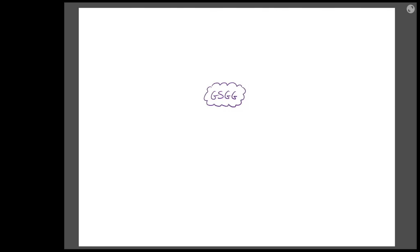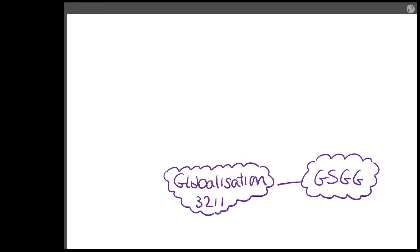It follows the same structure, so I have used the specification to make the mind maps and this can be used to complement your revision so you can add further detail with different case studies and examples from your lessons. I'm going to start with the mind map for globalisation, which is 3.2.11 on the specification. I made this mind map a little too big, so leave some gaps around the side as I'm going to add global systems (3.2.12) on the side as well.